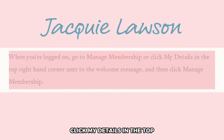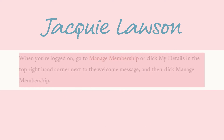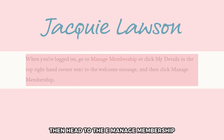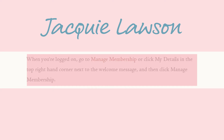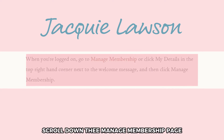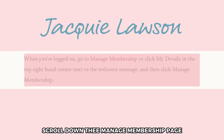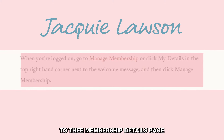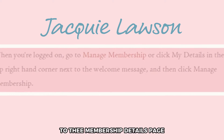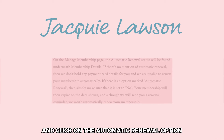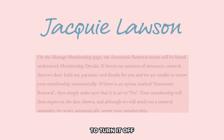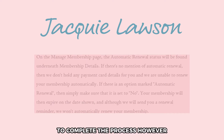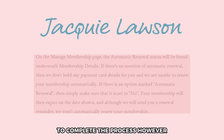Click My Details in the top right corner of the home page, then head to Manage Membership in the resulting menu. Scroll down the Manage Membership page to the Membership Details section and click on the Automatic Renewal option to turn it off to complete the process.